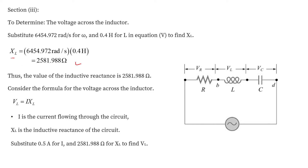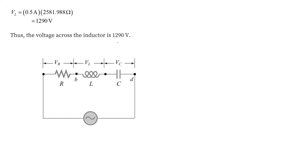The inductive reactance is 2581.988 Ω. The voltage across the inductor is I·XL = 0.5 A × 2581.988 Ω = 1290 V. Since XL equals XC, the voltage across the capacitor equals the voltage across the inductor, so the voltage difference across the capacitor is also 1290 V.